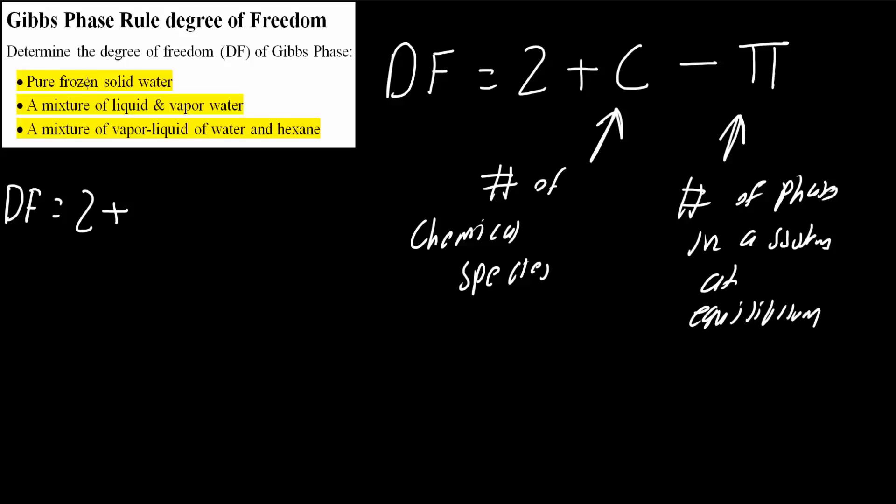The first one: pure frozen solid water. DF = 2 + 1 - 1. The number of chemical species is just one because we're just dealing with water. The number of phases is one because it's just solid, not gas or liquid. So we get a DF of 2 for the Gibbs phase.